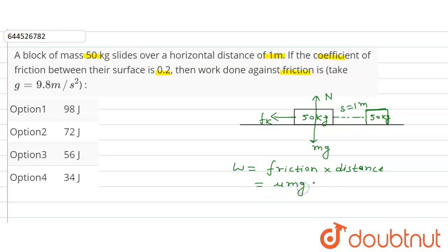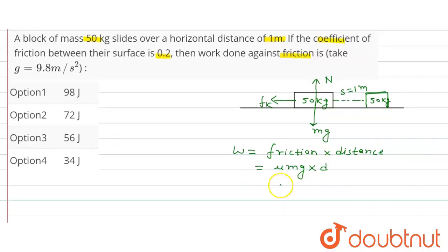mg into distance d. So mu value is 0.2, mass is 50, g value is 9.8, and d is 1. So from here work done w is equal to 98 joule. So this will be the value of work done, 98 joule, means here option first is correct option.